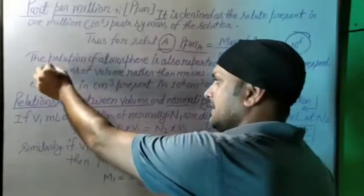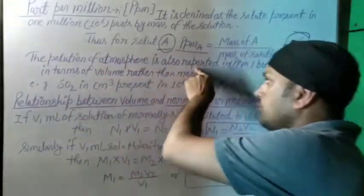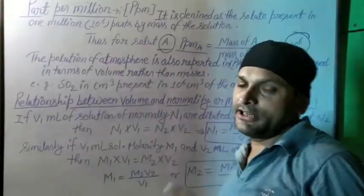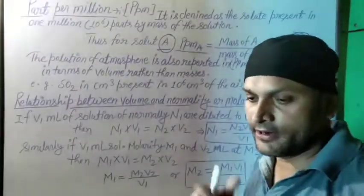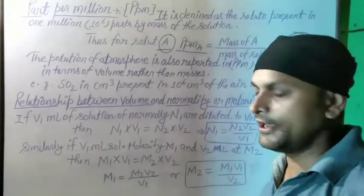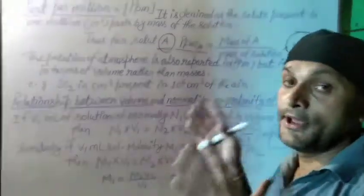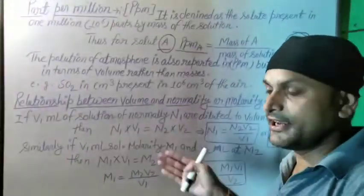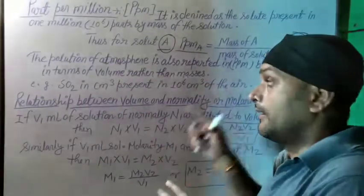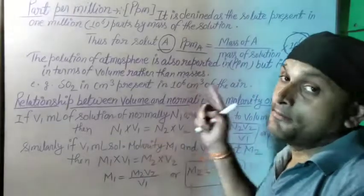Note: the pollution of the atmosphere is also reported in PPM. The impurities present in atmospheric conditions, present in air, are also represented using this. But in this case it is part by volume rather than part by mass.